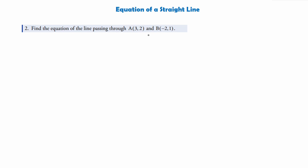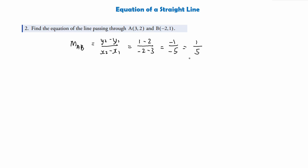We need the gradient of the line between these two points. The gradient of AB is (y₂ − y₁) divided by (x₂ − x₁). Substituting our values: y₂ is 1, y₁ is 2, x₂ is −2, x₁ is 3. This gives us (1 − 2) divided by (−2 − 3), which is −1 over −5, and that is the same as 1/5. We've got a negative on both sides, so we can change it to positive to get 1/5.